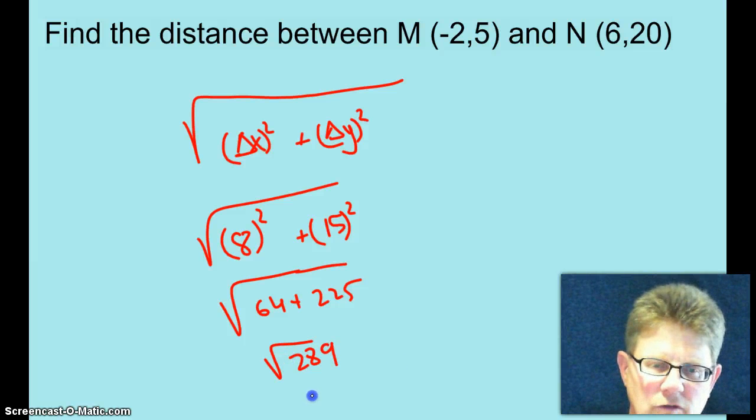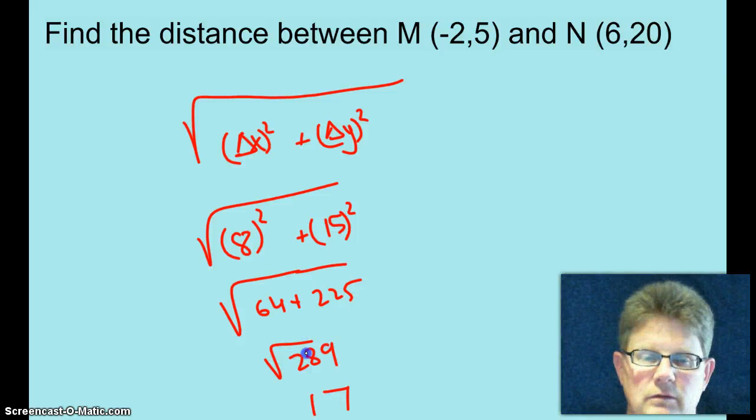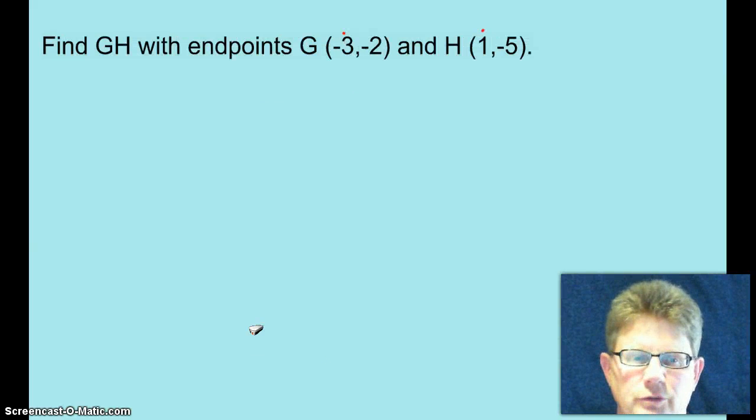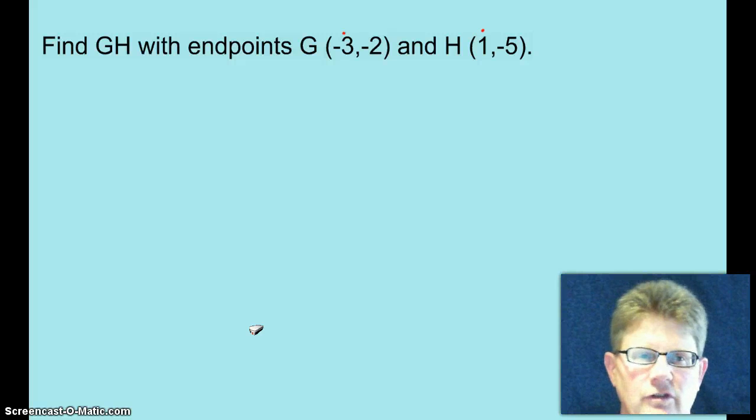And anybody worth their weight in salt says, no, that's a perfect square. 17 times 17 is 289. So the answer, 17. And as the French would say, ho, ho, ho, we are now at the piece de resistance. And yes, I know, I said that wrong. Stinking French, can't say anything right.